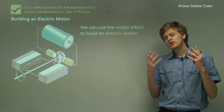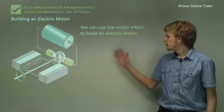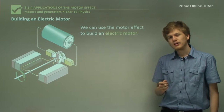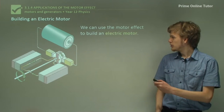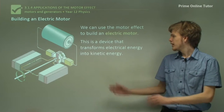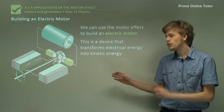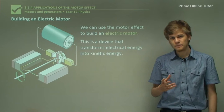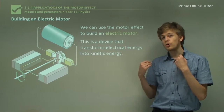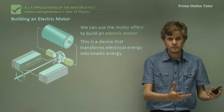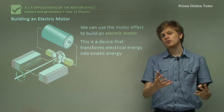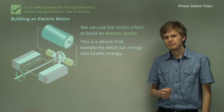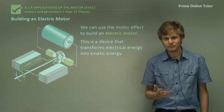We can use the motor effect in order to build an electric motor. So what is an electric motor? It's a device that continuously transforms electrical energy into kinetic energy. That means that if we put a constant supply of electricity in, it will give us a constant supply of kinetic energy out. I'm sure we can see that this could be very useful.